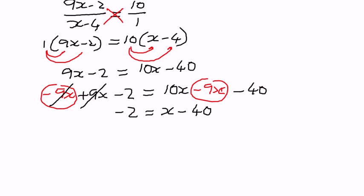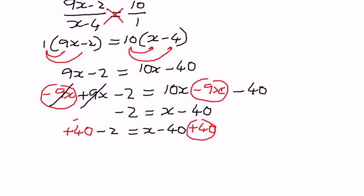We want to find the value of x by isolating the x term. We need to get rid of the negative 40 on the right-hand side, so we add 40 to both sides of the equation. The positive 40 and negative 40 cancel out, leaving us with x equal to 40 minus 2, which is 38.